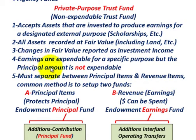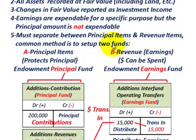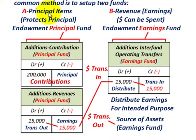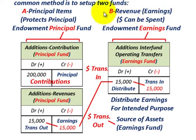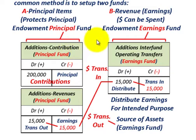That's the key when talking about non-expendable trust funds — any earnings off the principal can be spent, but the principal itself must remain intact. You must separate the principal items from the revenue items. The common method is to set up two different funds: an endowment principal fund and an endowment earnings fund. This is what we want to look at when dealing with these non-expendable trusts.